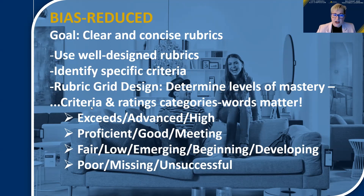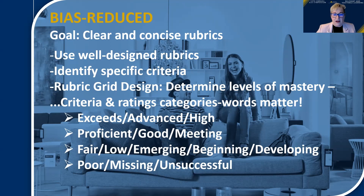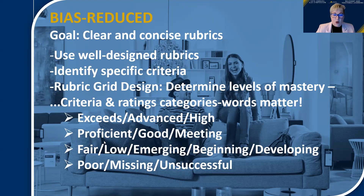When we're designing a rubric, we'll use a heading called criteria, and then our rating categories. Many presenters gave great examples of how to name those boxes. We can say the student exceeded, advanced, performed at high competency, or was just proficient. Other options include: meeting expectations, fair, low, emerging, beginning, developing, poor, missing, or unsuccessful. These are all different kinds of rating categories.